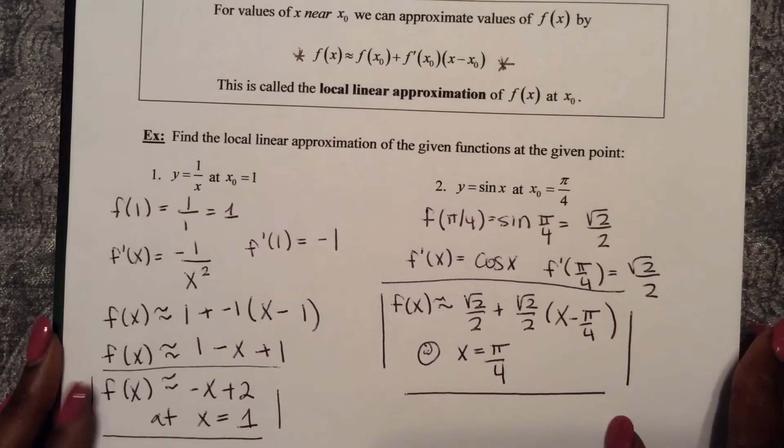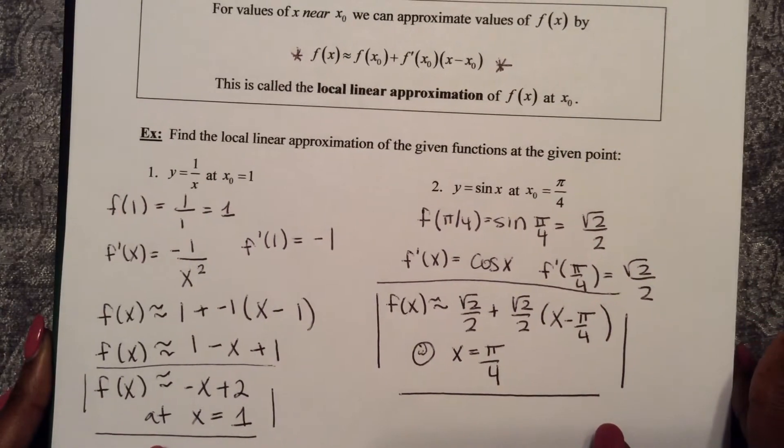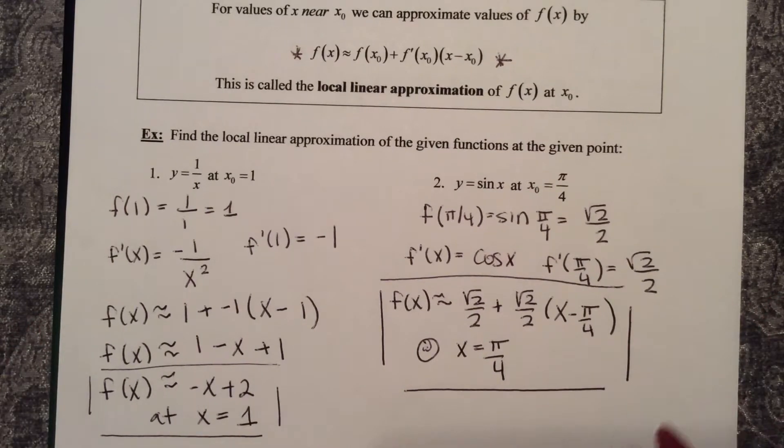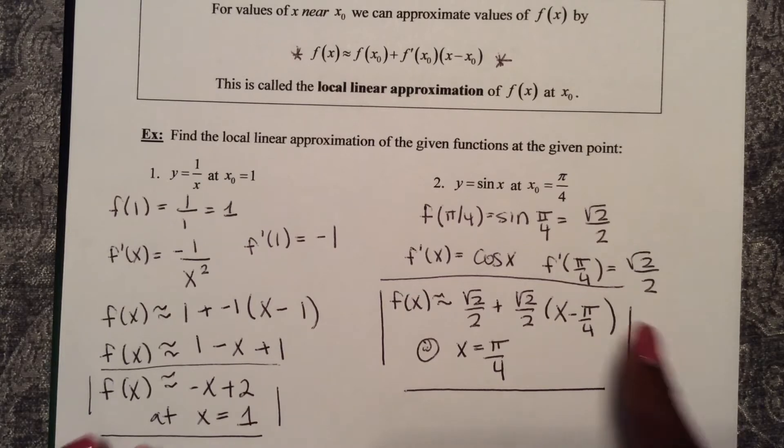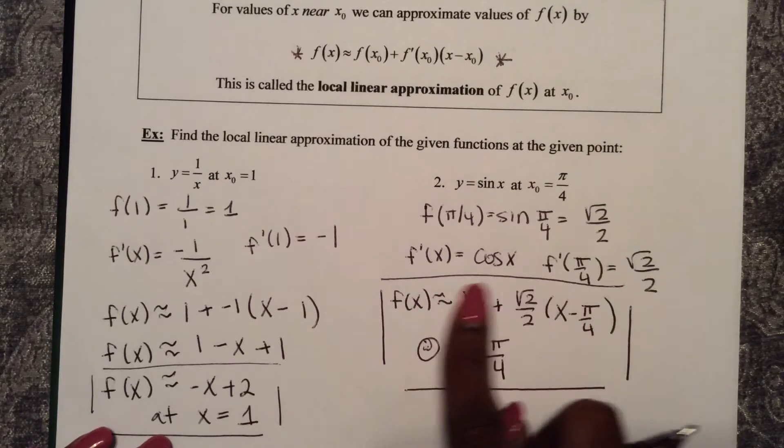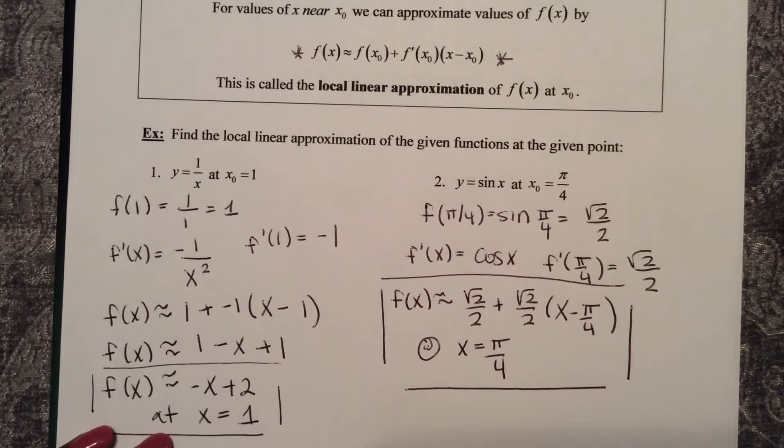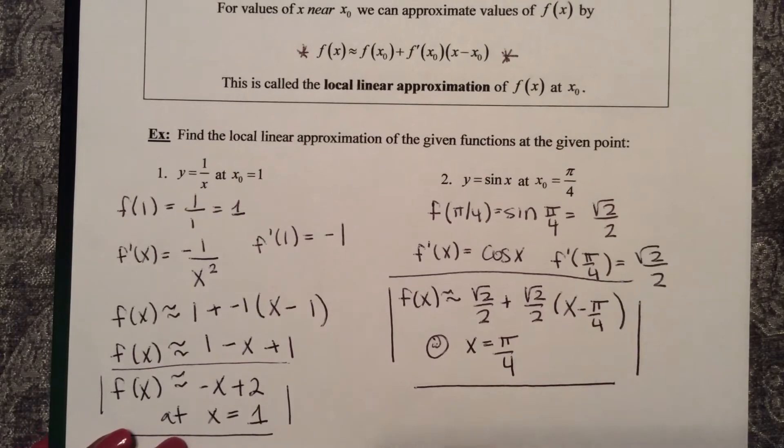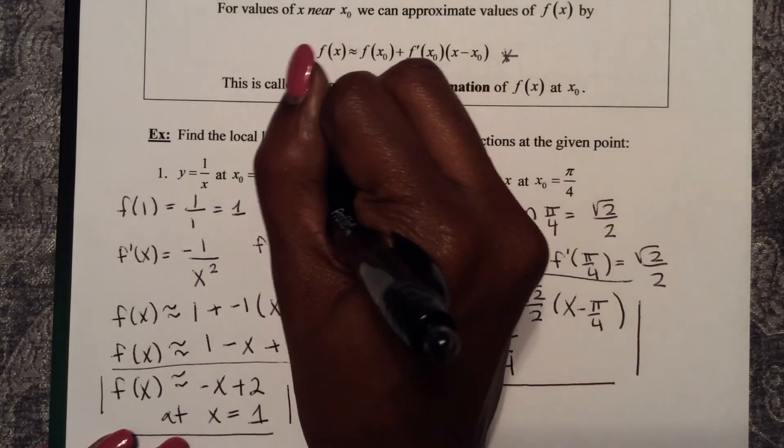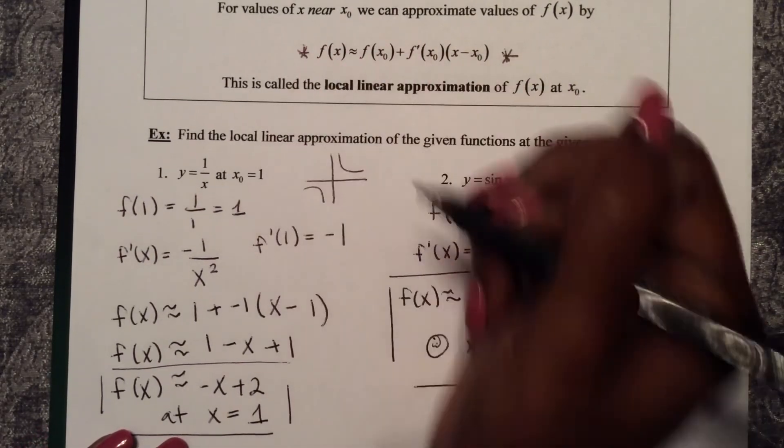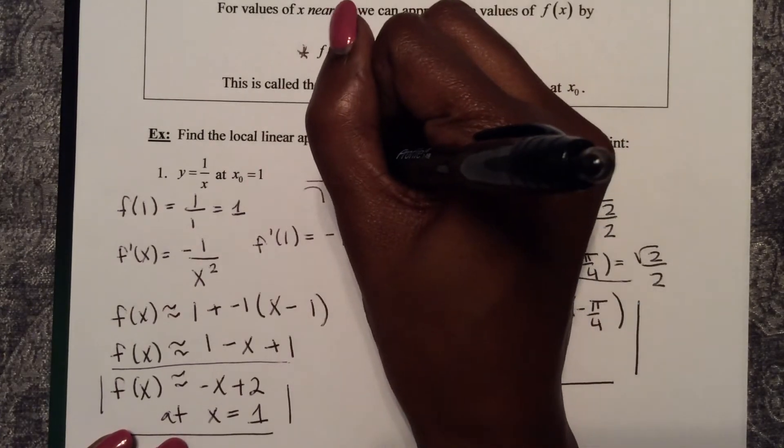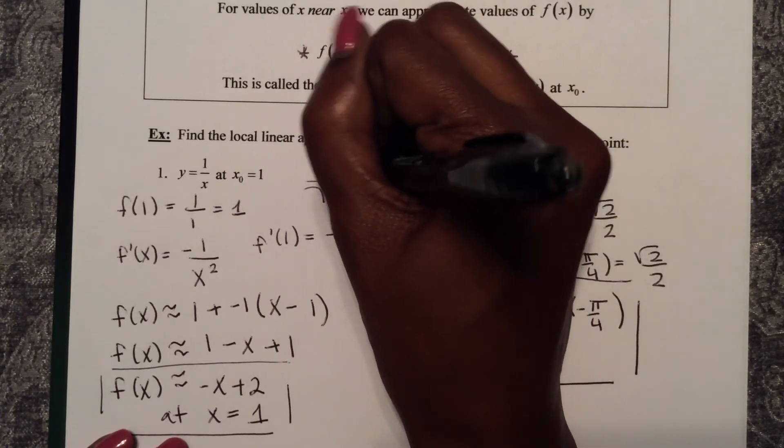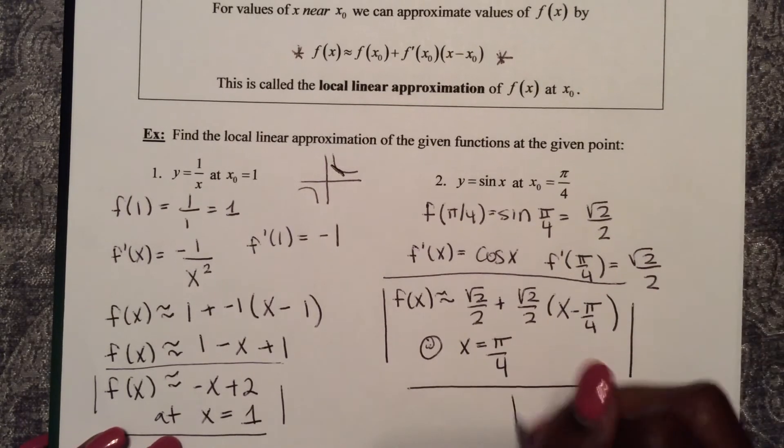If I could zoom in really close at x equals pi over 4 and see my function as a straight line around that value, this would be the equation. So remind ourselves visually, 1 over x looks like this. At x equals 1, we're trying to see that linear approximation. Same thing with sine.